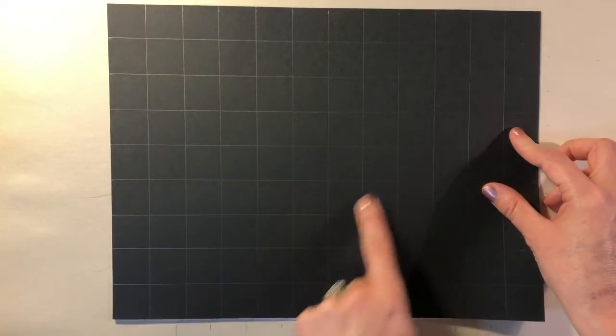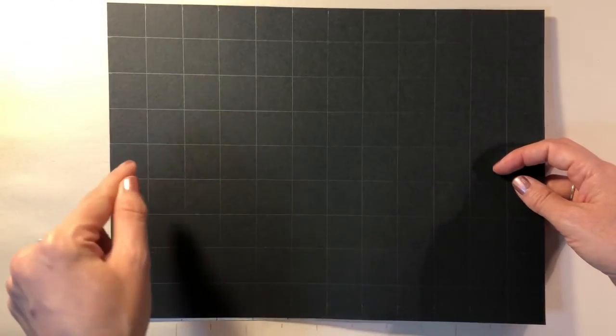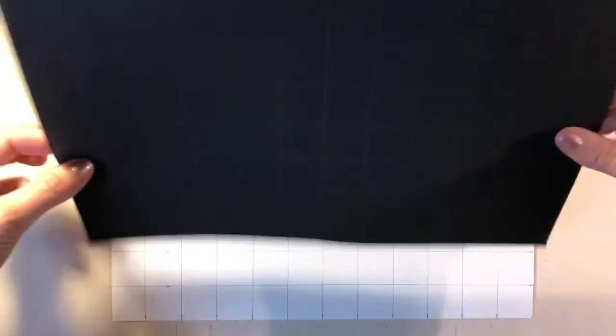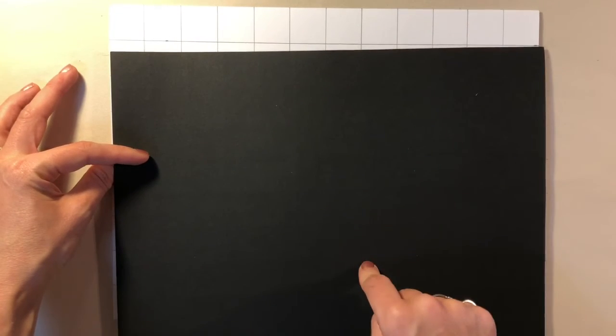What we're actually going to do with this project is draw our plants on this side of the paper, then we're going to very carefully be cutting it out. But once it's cut out, we're going to flip it over and use the back side to be the finished side.